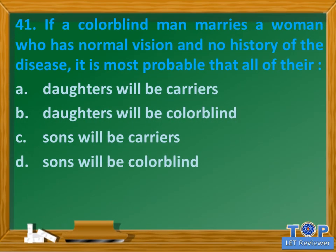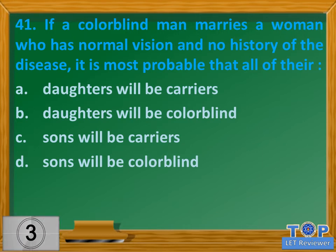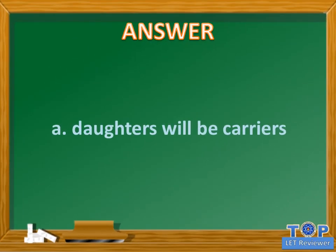Question number 41. If a colorblind man marries a woman who has normal vision and no history of the disease, it is most probable that all bear: A. Daughters will be carriers. B. Daughters will be colorblind. C. Sons will be carriers. D. Sons will be colorblind. Answer: A. Daughters will be carriers.